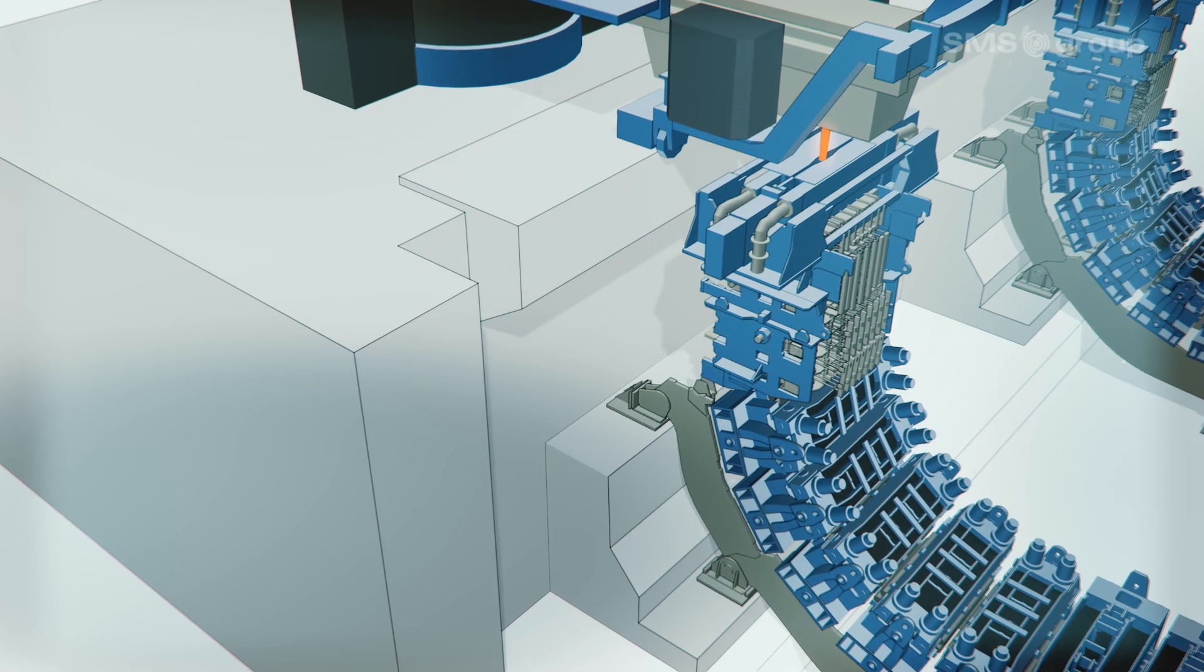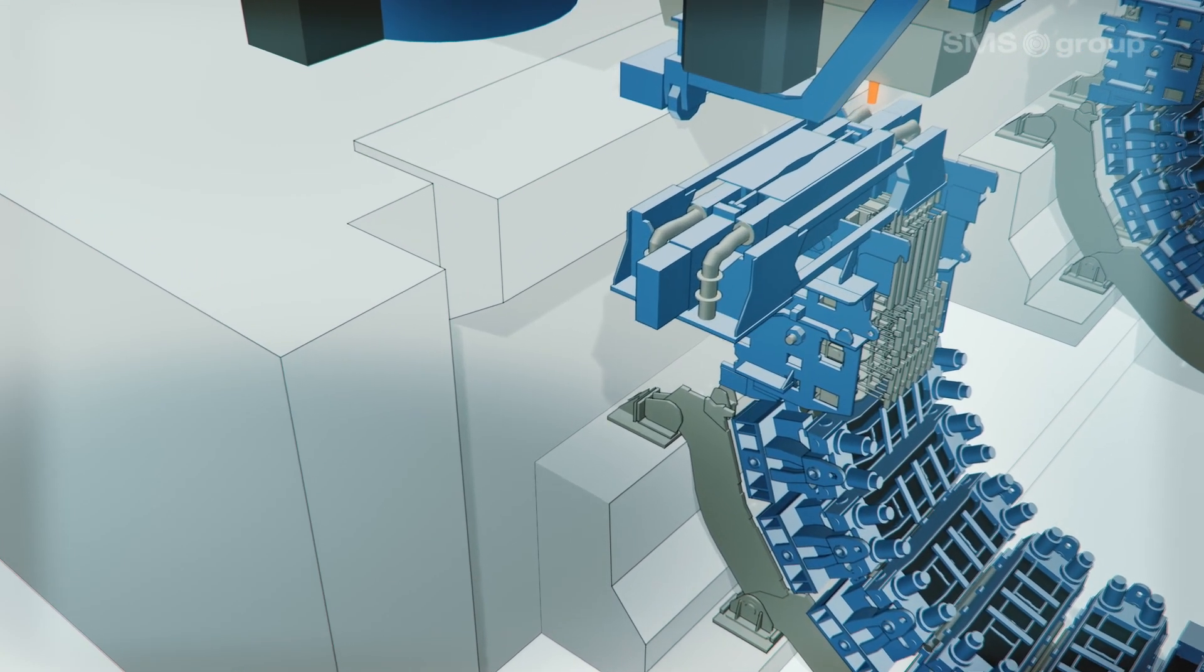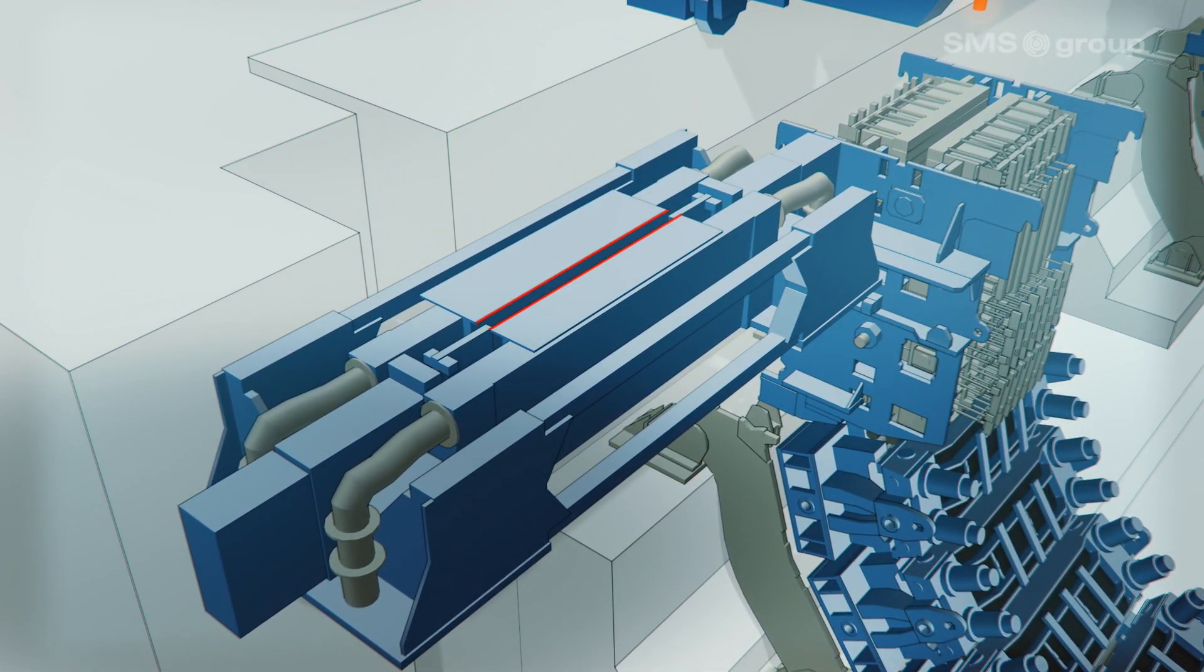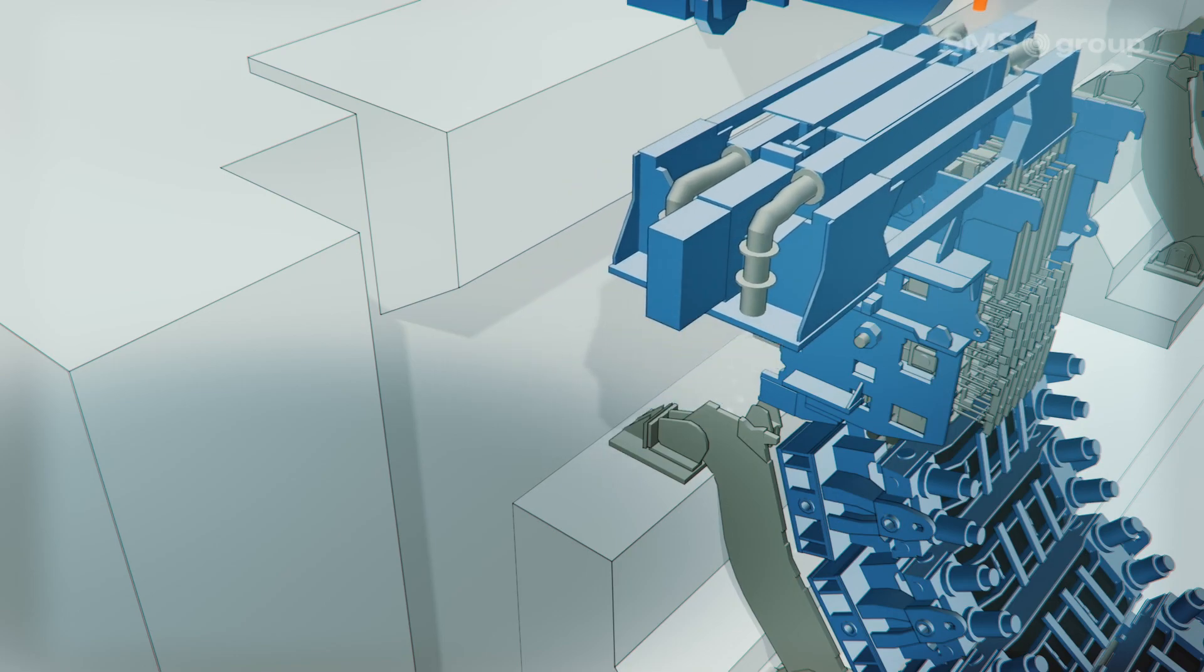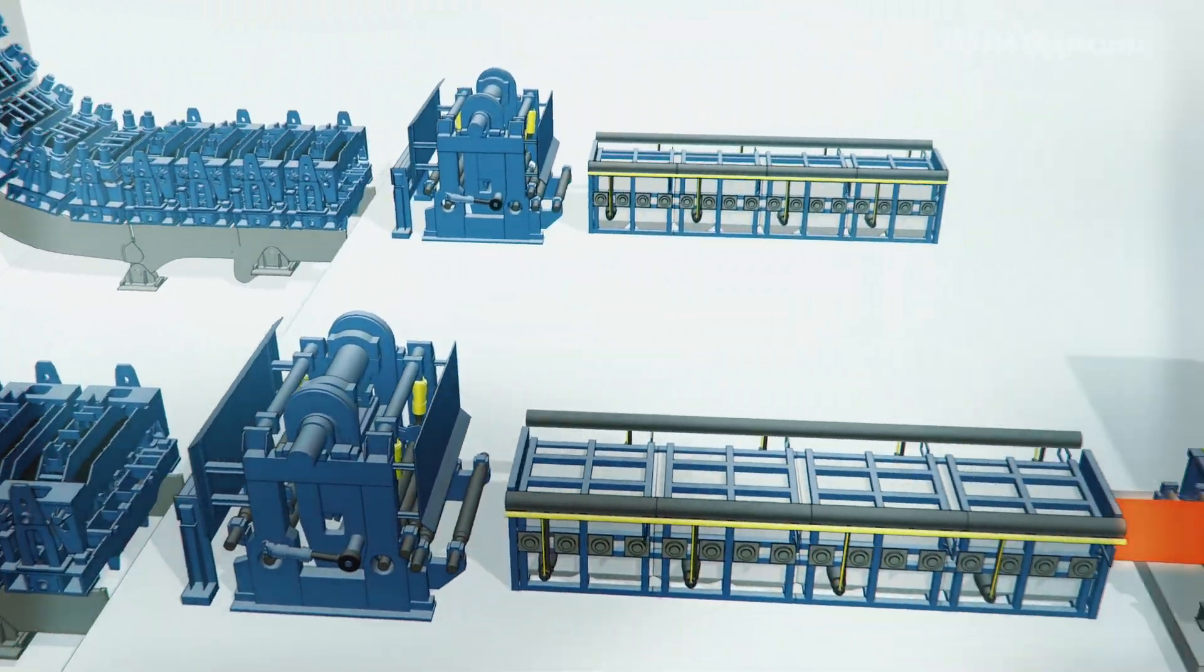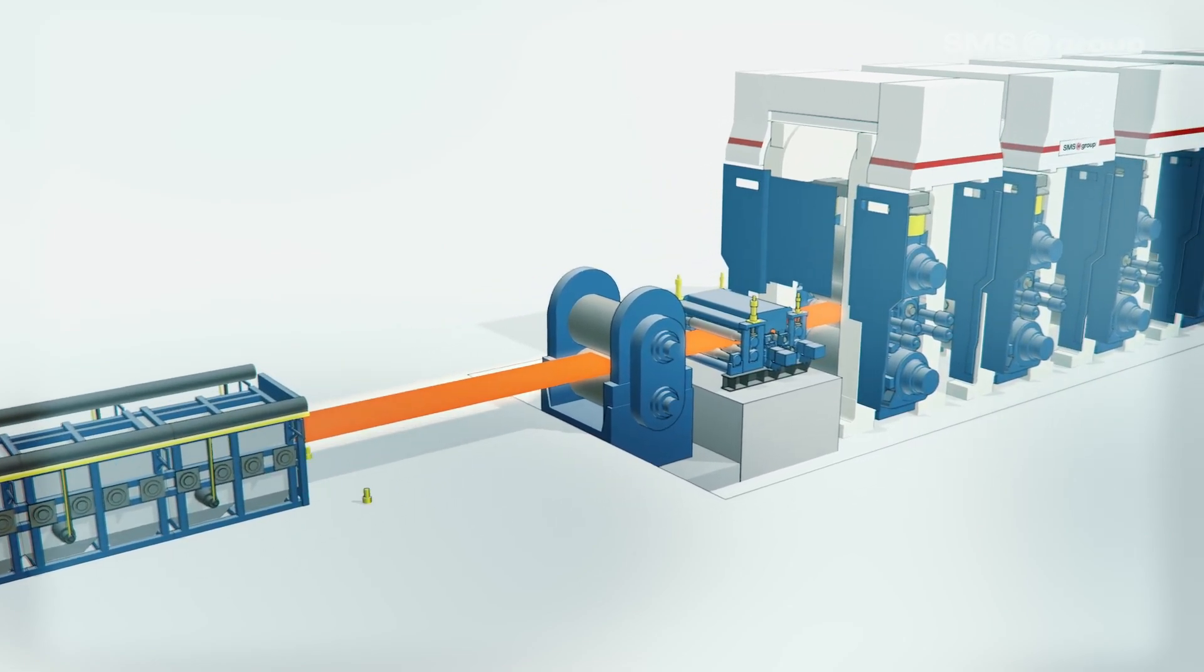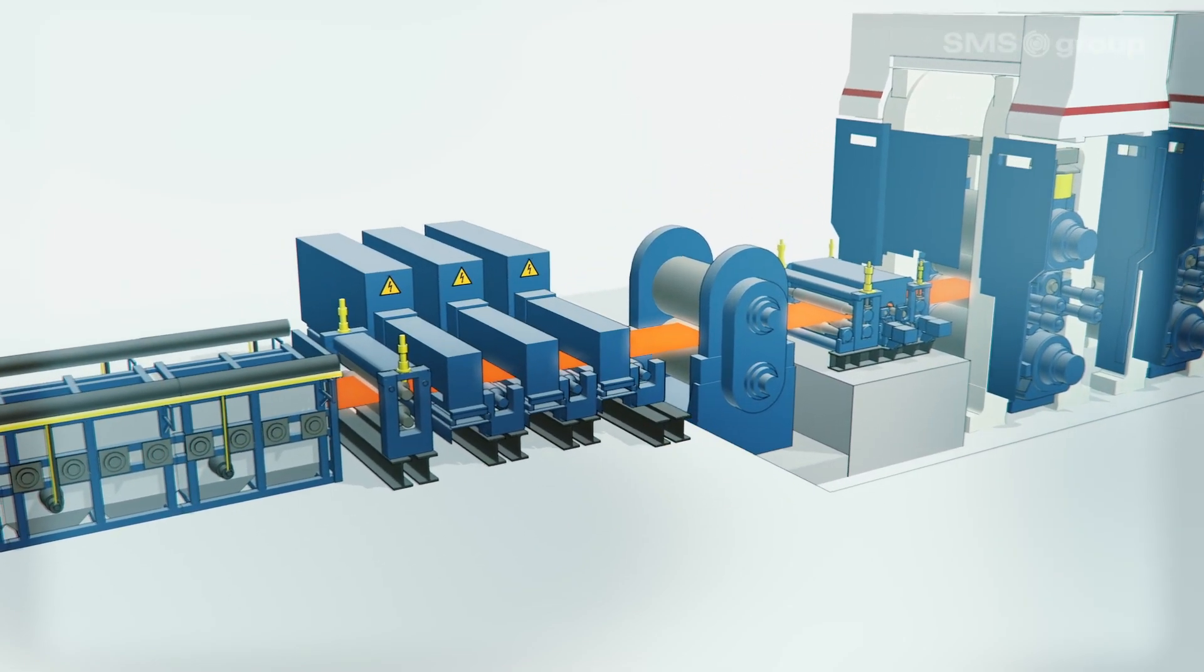To extend the product mix further, an interchangeable casting machine head with a parallel mold allows the production of highly crack-sensitive steels, such as peritectic grades. A combination of heated roller table and induction heating system can be used for a temperature boost when the focus is on thin, high-strength steel grades.